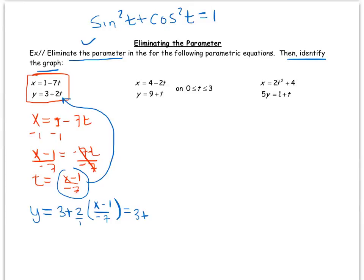And we're going to write this as 3 plus - the 2 multiplies to the top - 2x minus 2 over negative 7.